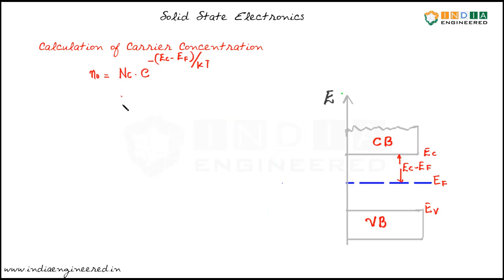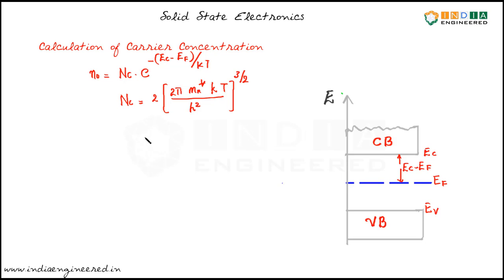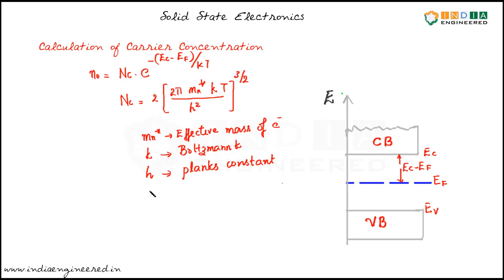The effective density of states Nc is given by Nc = 2 · (2π · mn* · kT / h²)^(3/2), where mn* is the effective mass of the electron, k is the Boltzmann constant, h is Planck's constant, and T is the absolute temperature in Kelvin. For the purpose of gate exams, the expression N0 = Nc · exp(−(EC − EF) / kT) is more than enough to solve questions, though it's still good to know the full Nc expression.